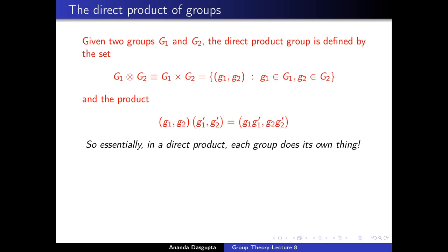Of course, what we really should do at this stage is verify that what we have is really a group — that the underlying set of pairs, with this particular multiplication rule, does satisfy all the basic properties that a group must have. This is really very trivial to show, so I am not going to go into the details. It is very easy to verify that this really is a group.